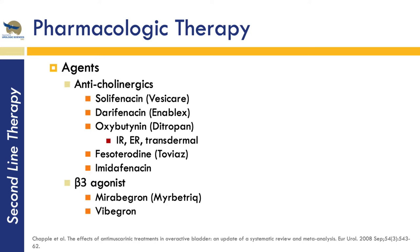A relatively newer drug class is the beta-3 agonists. For a very long time, mirabegron was the only one available. But in Asia now there is a second beta-3 agonist, vibegron, that's available — created primarily to compete with mirabegron since it was the only one on the market.